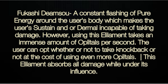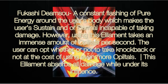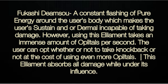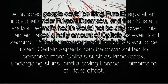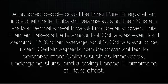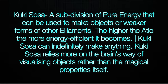Fukushi diamzu is a constant flashing of pure energy around the user's body which makes the user's sustain and/or dermal incapable of taking damage. However, using this element takes an immense amount of oplotals per second. The user can opt whether or not to take knockback at the cost of even more oplotals. This element absorbs all damage while under its influence — a hundred people could be firing pure energy at an individual under fukushi diamzu and their sustain/dermal health would not be lower afterwards. Even for one second, 15% of an average adult's oplotals would be used. Certain aspects can be downshifted to conserve oplotals, such as allowing knockback, stuns, and forced elements to still take effect.